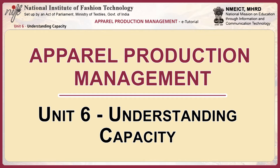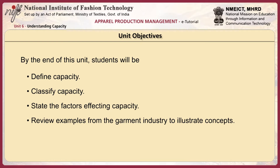We have come to Unit 6. This particular module comes about to understanding capacity. By the end of this unit, students will be able to define capacity, classify capacity, state the various factors affecting capacity, and review examples from the garment industry to illustrate concepts.